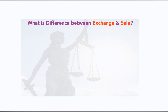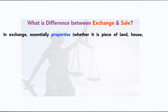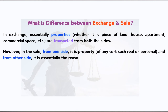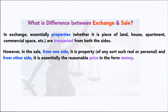Now, what is the difference between exchange and sale? In exchange, properties — whether movable or immovable, such as land, house, apartment, or commercial space — are transacted from both sides; both parties transfer some product. However, in sale, from one side it is property of any sort, and from the other side it is essentially money — a reasonable price. So if you are selling something, you receive money; if you are buying, you receive the product and pay money.